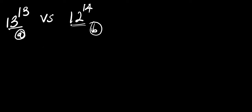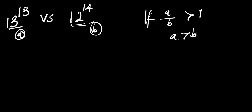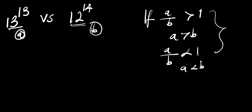And this is our b. Now if a divided by b happens to be greater than 1, that means a is greater than b. Also, if a divided by b happens to be less than 1, that means a is less than b. So we are going to compare everything to 1.